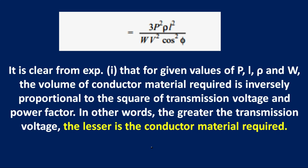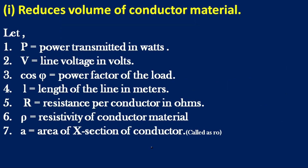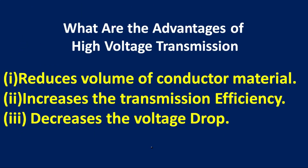The volume of conductor material required is inversely proportional to the square of transmission voltage and power factor. The greater the transmission voltage, the lesser the conductor material required. The first advantage reduces the volume of conductor material, and the second increases the transmission efficiency. Thank you for watching.